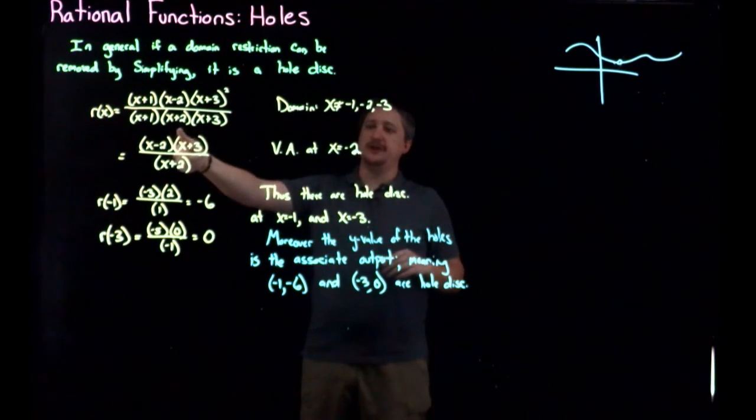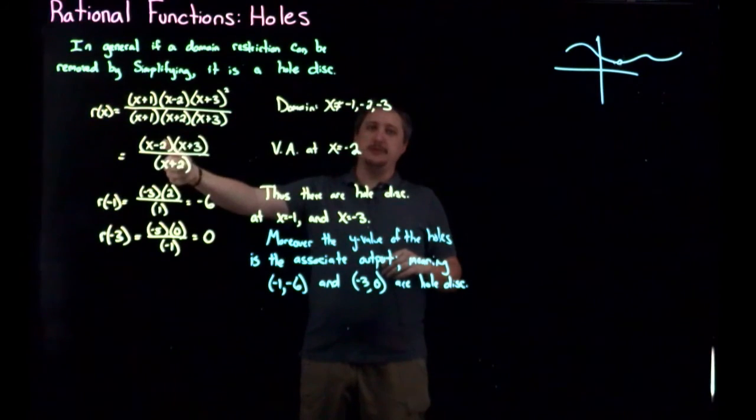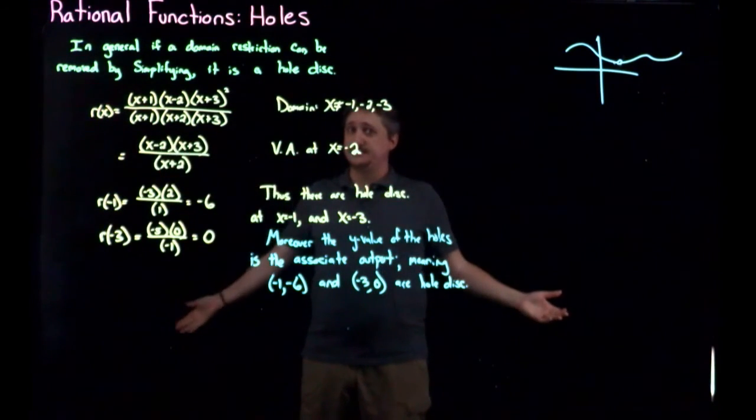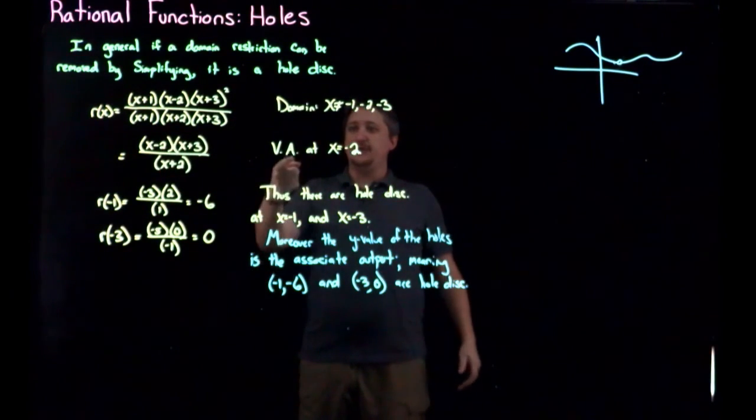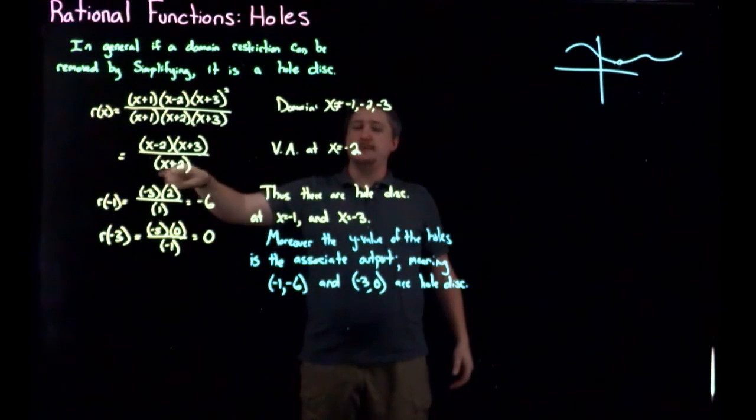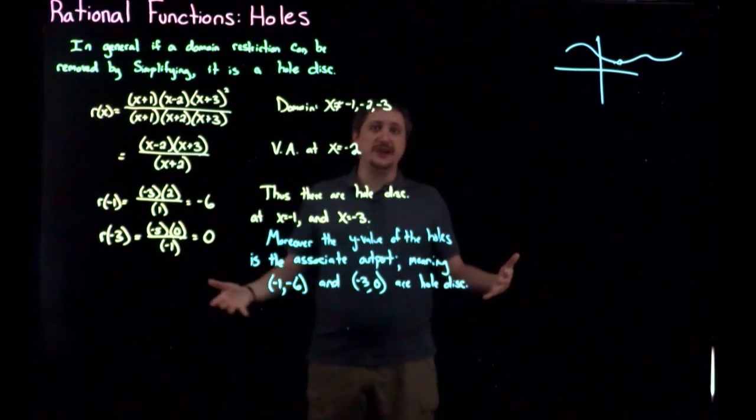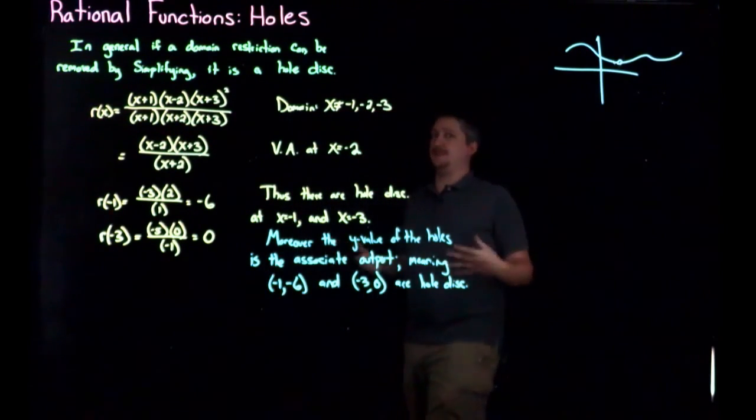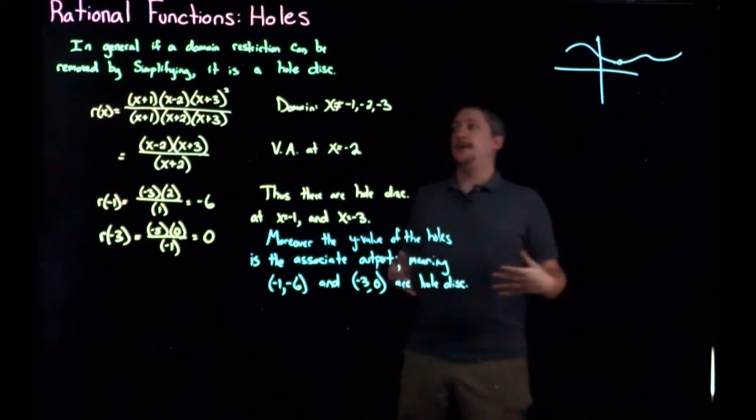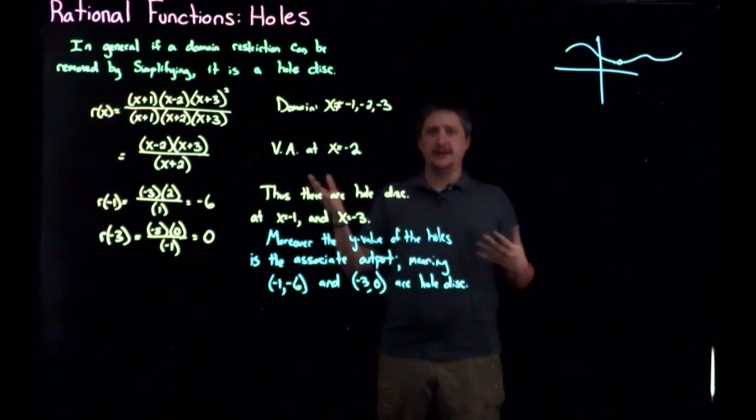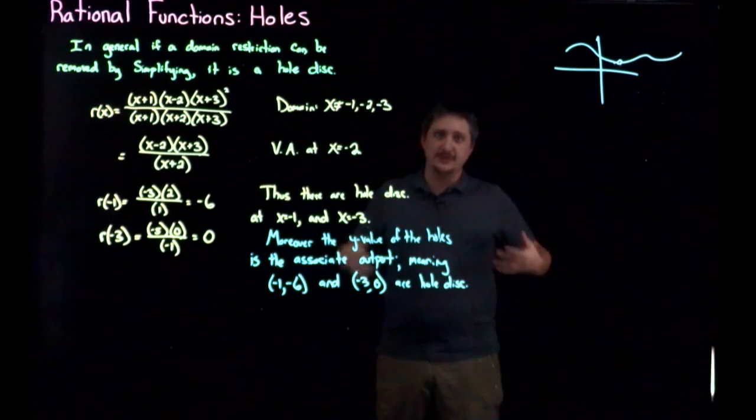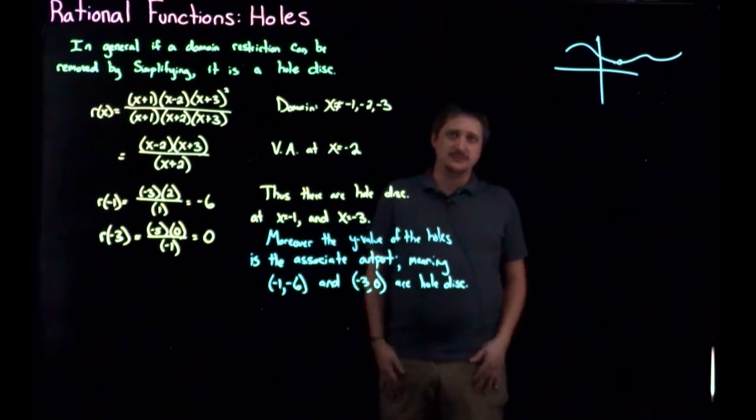I say probably because if the top is still zero, excuse me, if the top when you evaluate it is a zero and the bottom is a zero, you still don't know what it is. So you can't just say that because the bottom is still zero that it's a vertical asymptote, because if the top is zero, you still can't figure it out. And sometimes you just can't simplify away the zero more if it's not a polynomial for example. And that's where you need limits and calculus and the whole shebang.